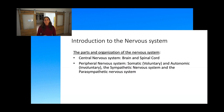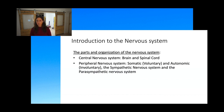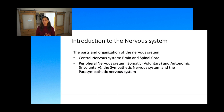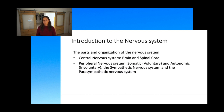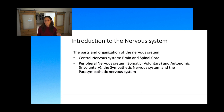If we want to divide the nervous system, we can't just talk about the central nervous system, but we're going to focus on that today. The central nervous system is the brain and spinal cord. The peripheral nervous system encompasses the somatic (voluntary) and autonomic (involuntary) nervous systems, which drive the sympathetic and parasympathetic systems.